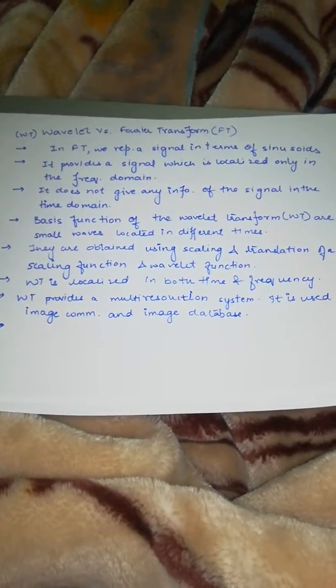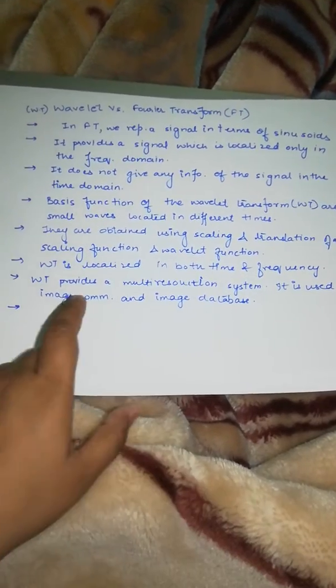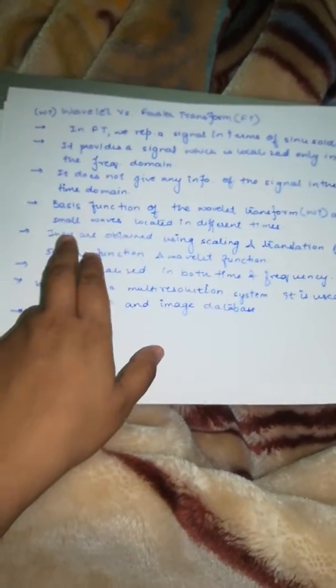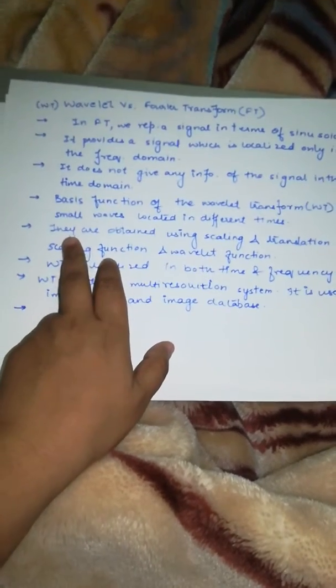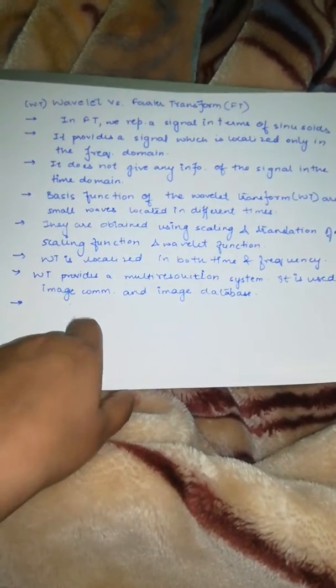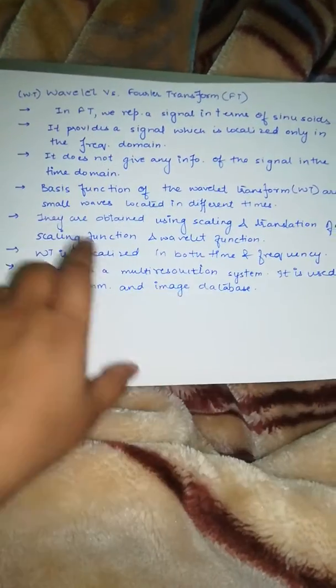What is the basis function of the wavelet transform? Small waves located in different times. Now look, here is a term, small waves. In the PPT, you can see the diagram, Daubechies, Haar, in this form the wavelet transform represents.